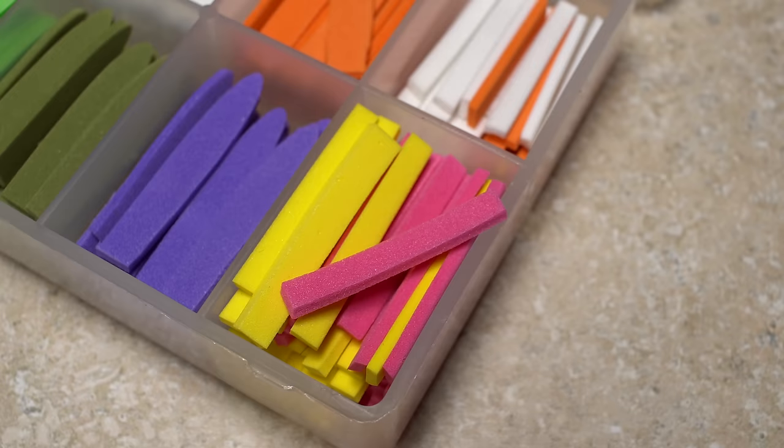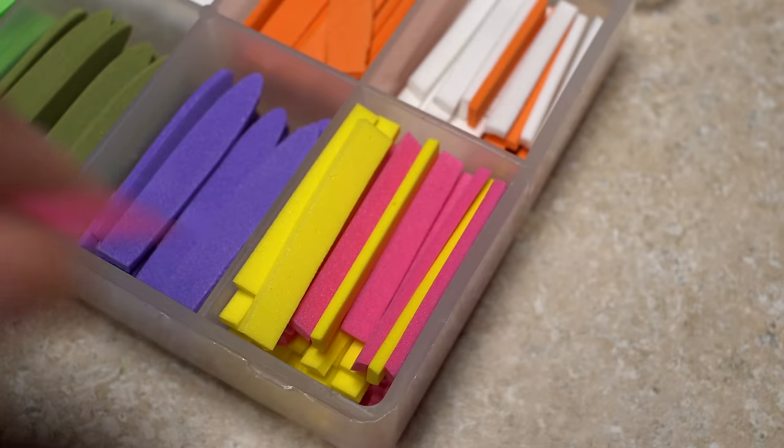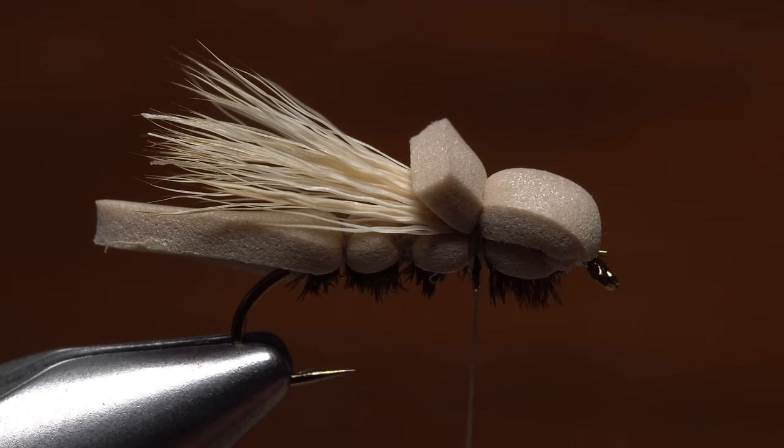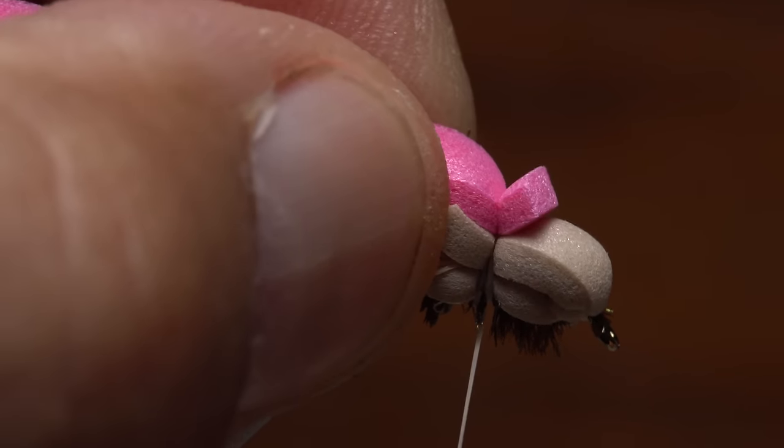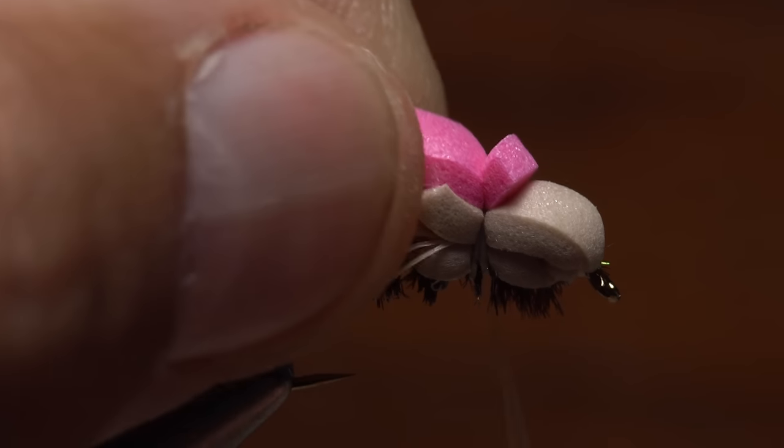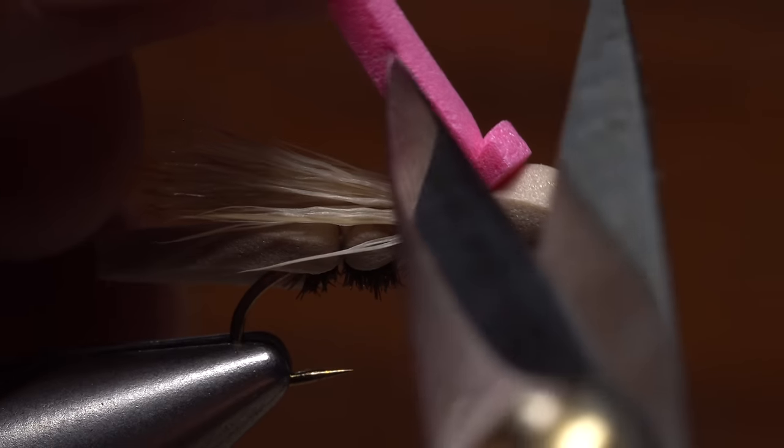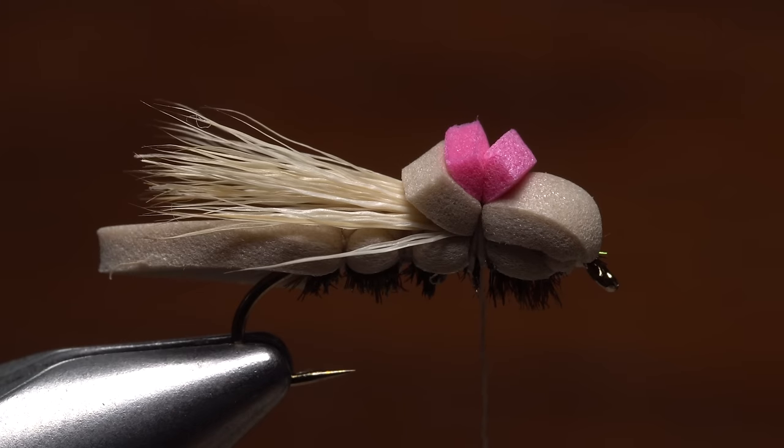To make the fly more visible, use a brightly colored piece of scrap foam or narrow strip. Lay the strip on top of the fly's foam head and bind it down with two or three turns of tying thread. Then snip the excess off close to create a very visible little hot spot.